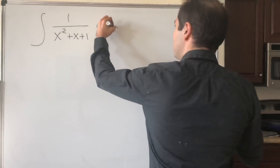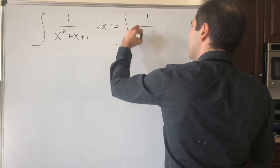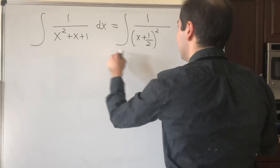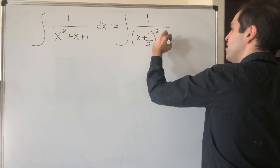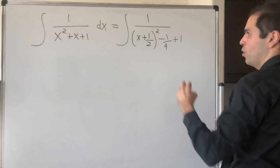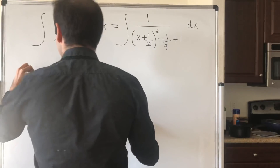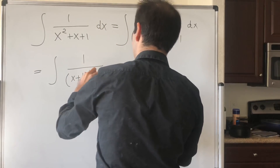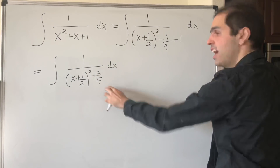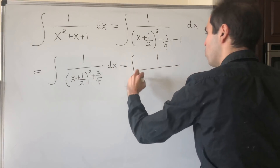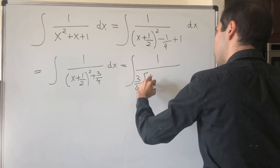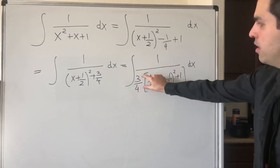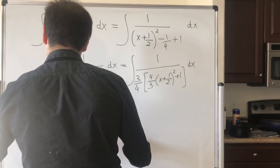I would like to solve a related integral: 1 over x squared plus x plus 1 dx. In fact, this is what motivated me to do this video. It turns out the technique for solving this is completely different — here you have to complete the square. Completing the square, this becomes 1 over x plus one half squared — because 2 times x times one half gives x — and because we added one half squared we have to subtract one quarter, but we still have the plus 1.